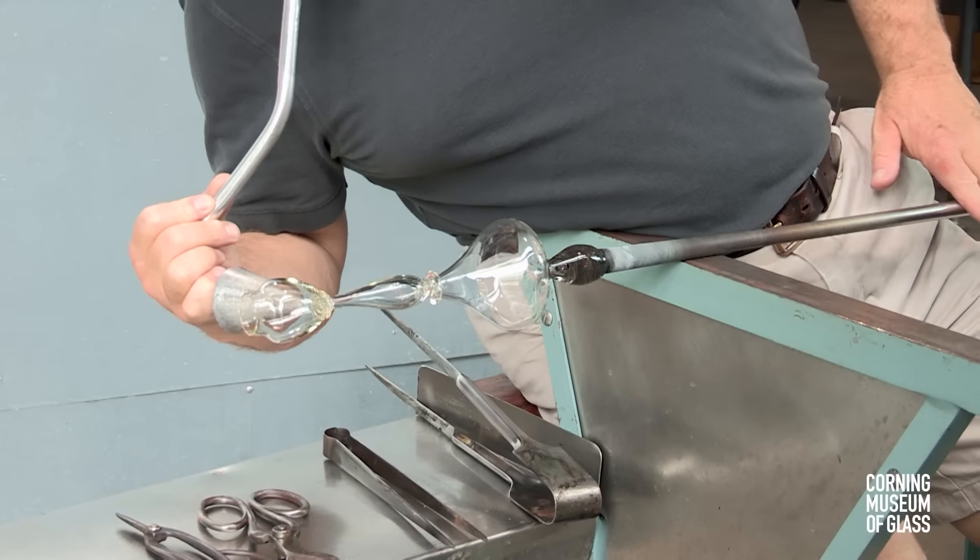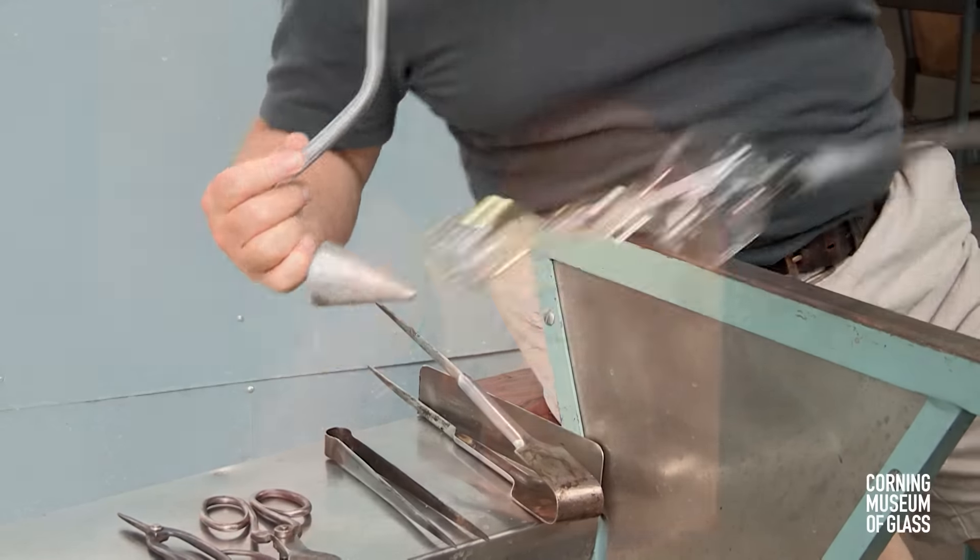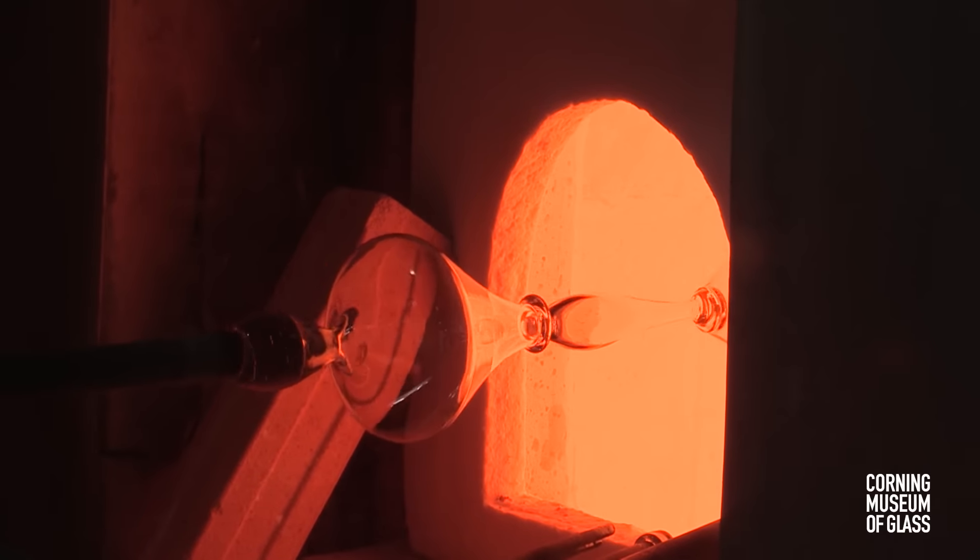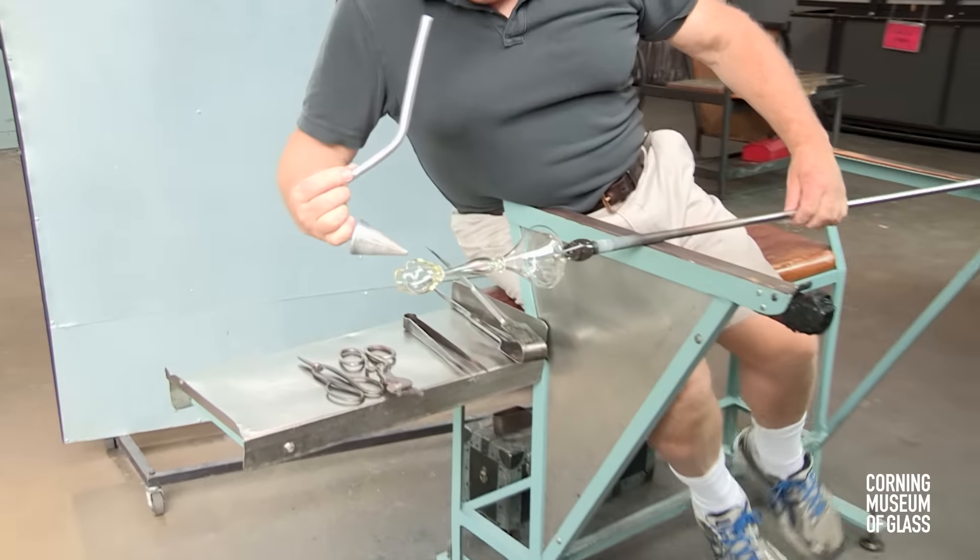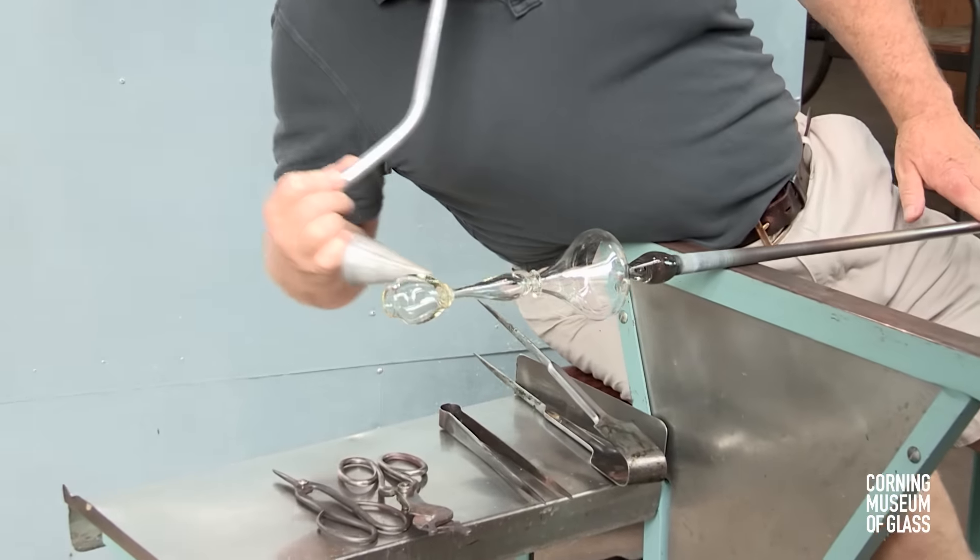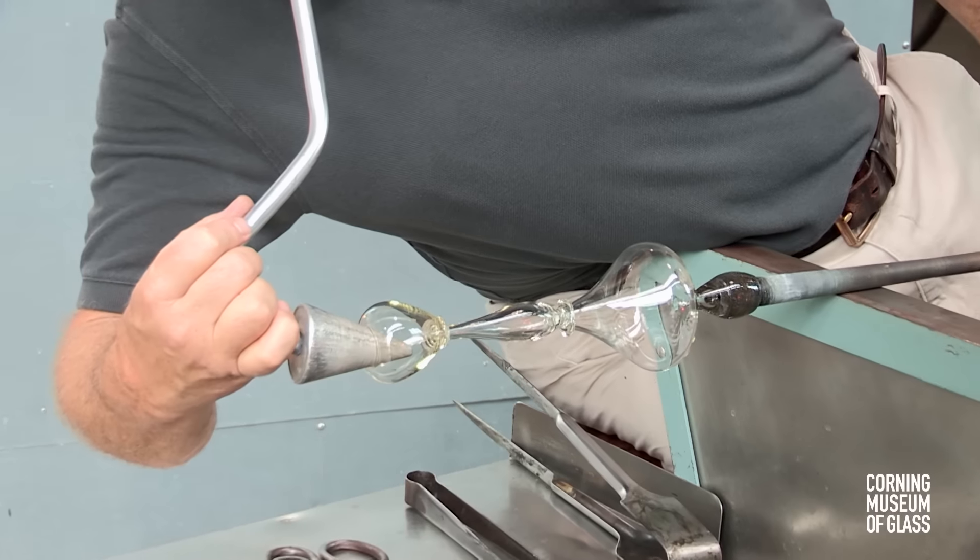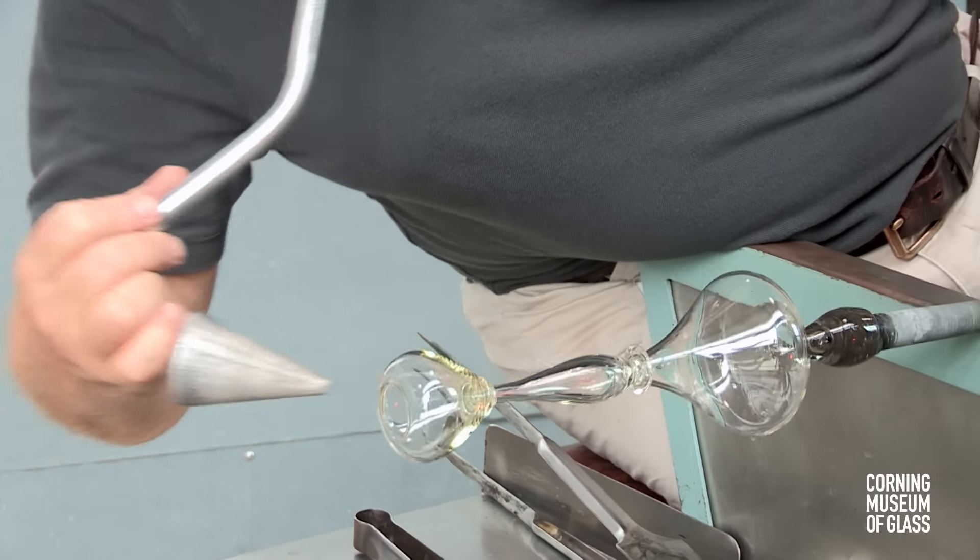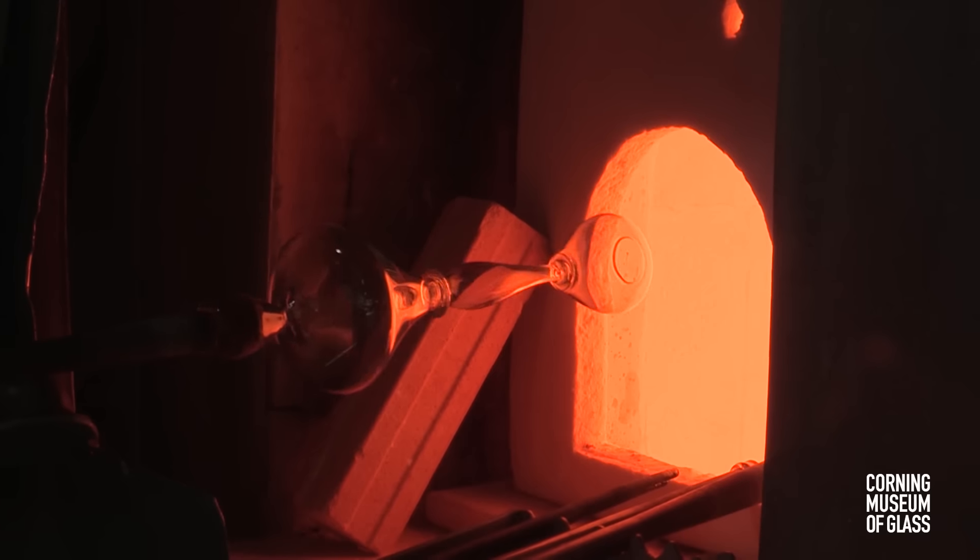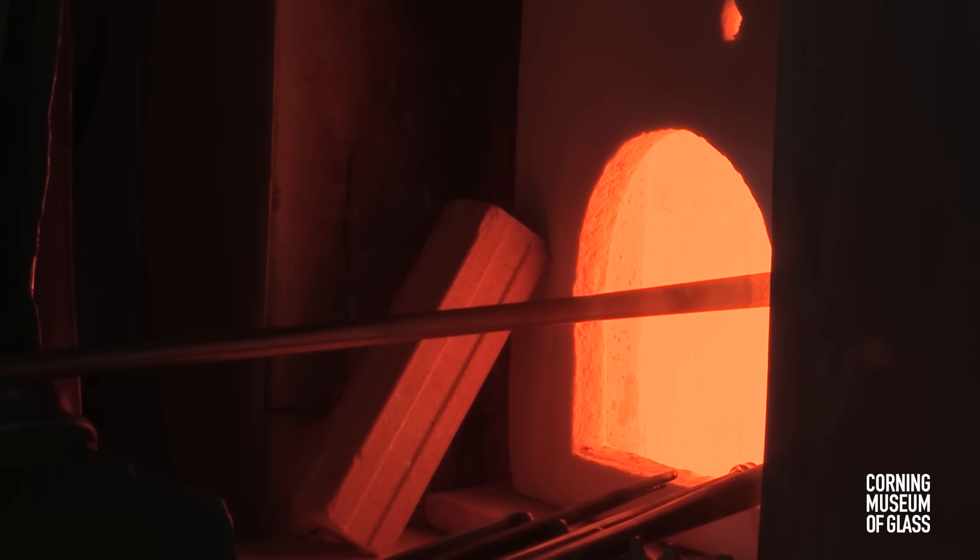The soffietta is used to cool the lower-most part of the stem. During the reheats, to soften the foot, the stem unavoidably softens. The soffietta is used to reshape the foot bubble, and this will make it easier to open to its final shape.